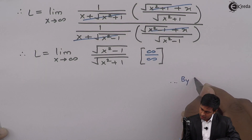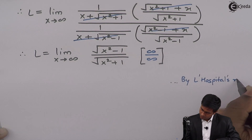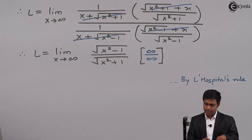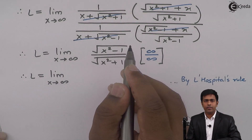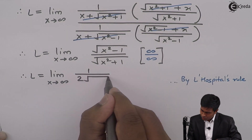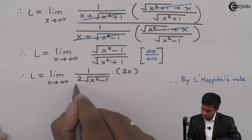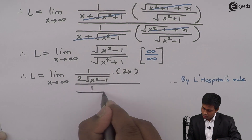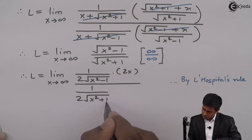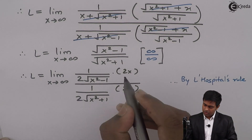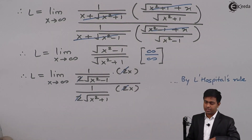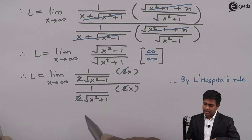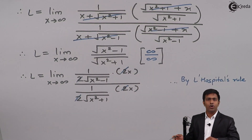By L'Hôpital's rule we find the derivative of the numerator and denominator. Therefore we get L as limit x tends to infinity, where the derivative of the numerator is x upon root of x squared minus 1, and the derivative of the denominator is x upon root of x squared plus 1. The factor of 2 and 2 cancels. However, if we cancel x and x here we will land up on the same term again — it will be circular and we will not get the answer. So we do not cancel it.